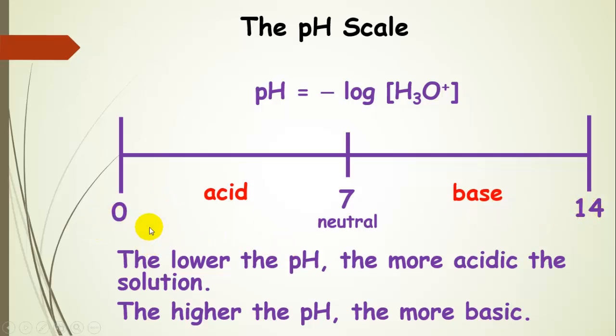A pH of 7 is neutral. If a solution has a pH below 7, it's an acidic solution. If a solution has a pH above 7, we call it a basic solution. The lower the pH, the more acidic; the higher the pH, the more basic.